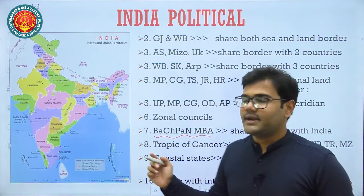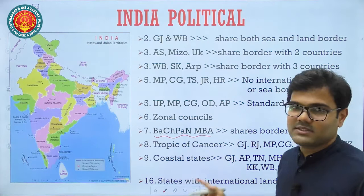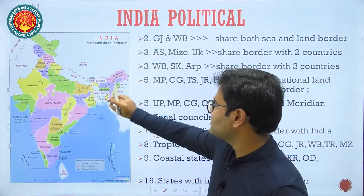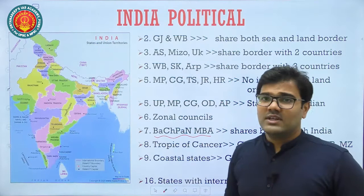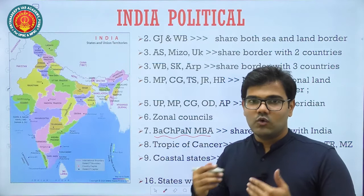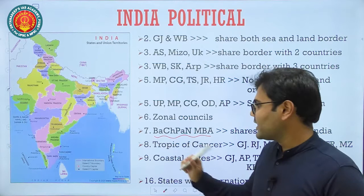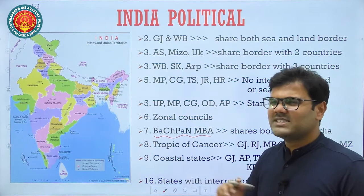There are 8 states in India through which the Tropic of Cancer passes. These states are very important and students tend to get confused about the northeastern states — for example, Tripura and Mizoram are among the states through which the Tropic of Cancer passes. These are very basic facts and you should know them, because missing them in the examination is a huge loss.